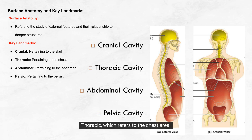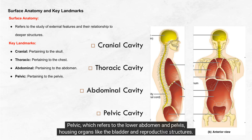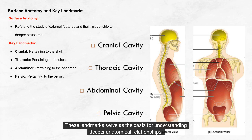Thoracic refers to the chest area, which includes major organs like the heart and lungs. Abdominal relates to the stomach area, which houses organs like the liver, stomach, and intestines. Pelvic refers to the lower abdomen and pelvis, housing organs like the bladder and reproductive structures. These landmarks serve as the basis for understanding deeper anatomical relationships.